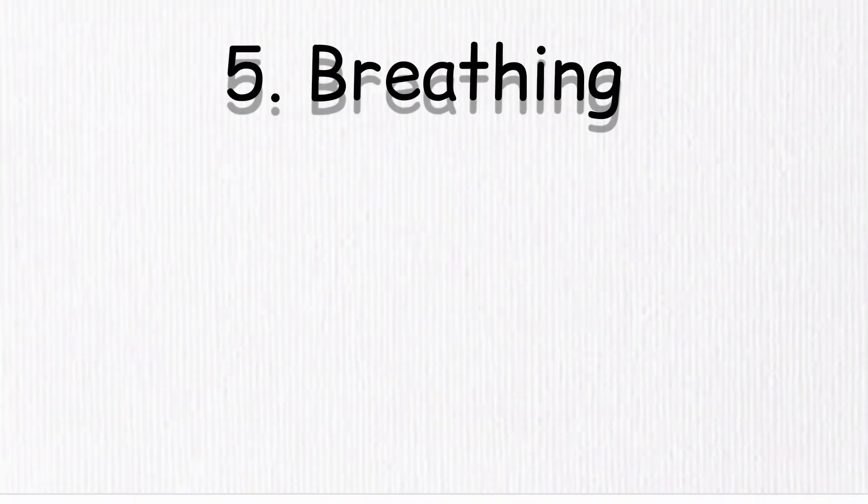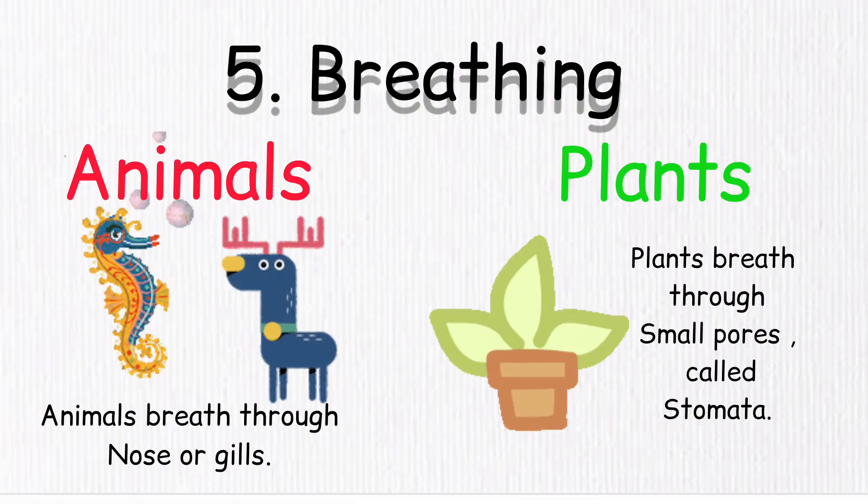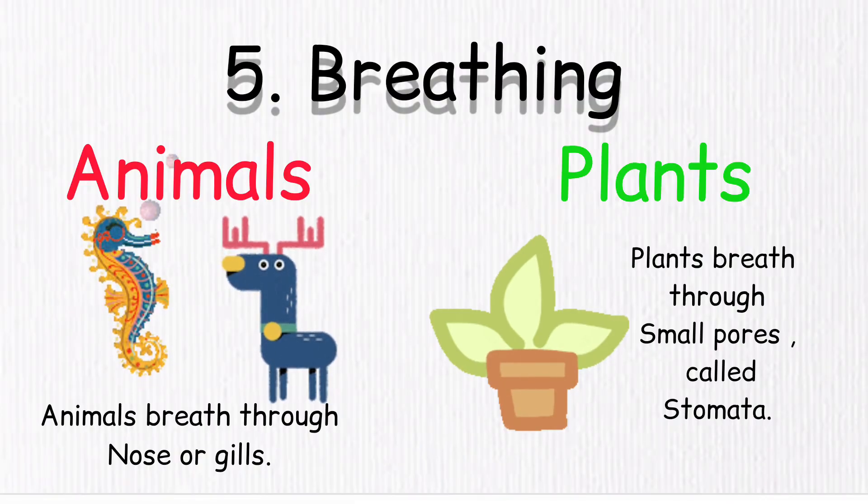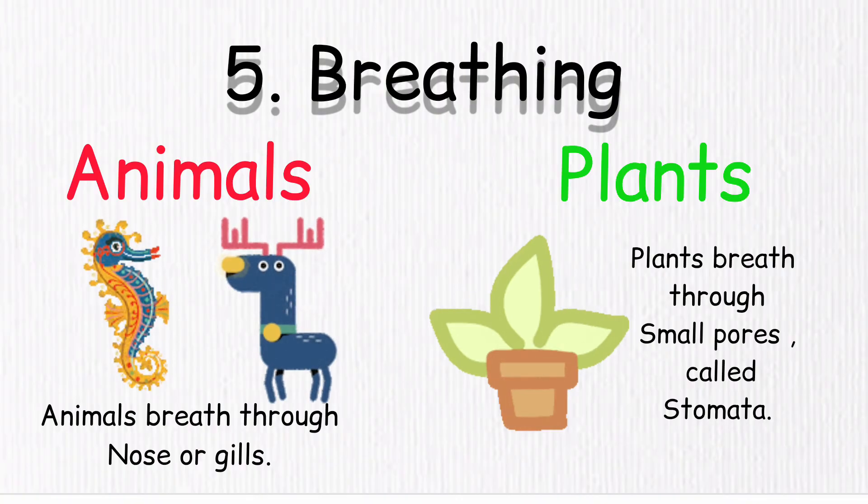Number 5, Breathing. Animals breathe through nose or gills, while plants breathe through small pores called stomata.